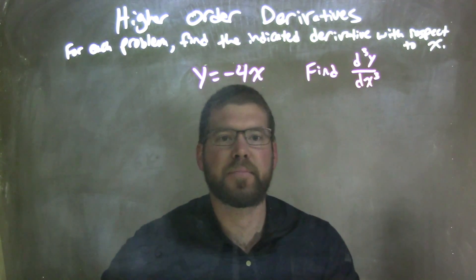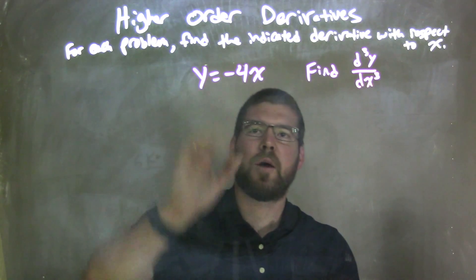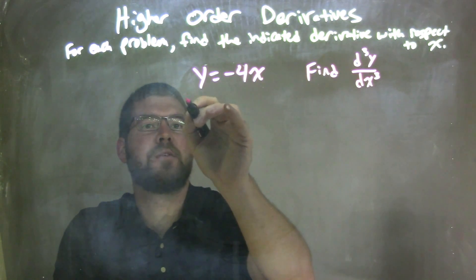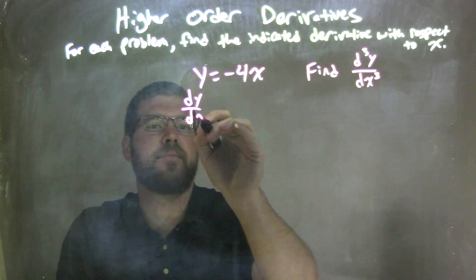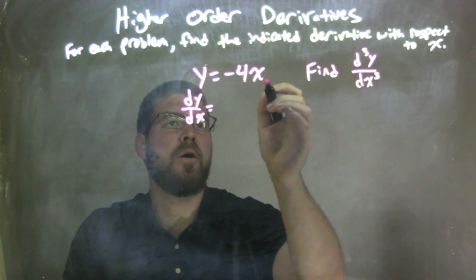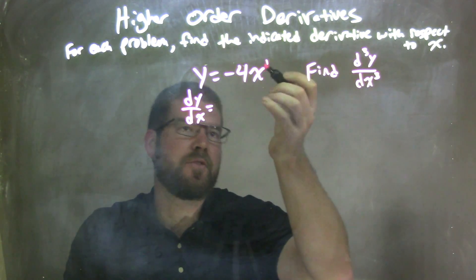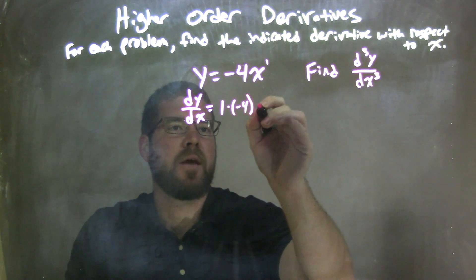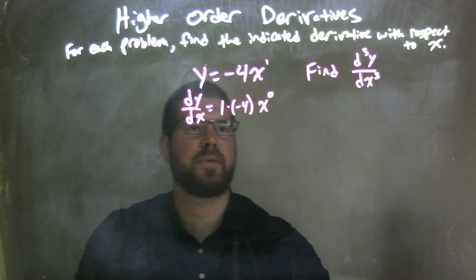Well, first thing I want to do is find my first derivative for my given function. So we have dy/dx is equal to, I use my power rule. There's a 1 up there, 1 comes down to 1 times negative 4x to the 0 power.